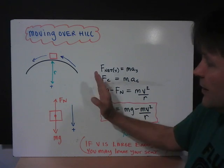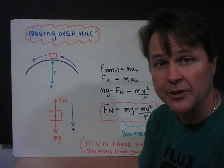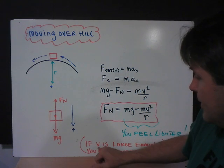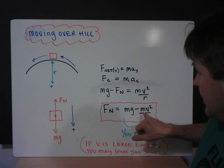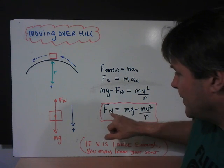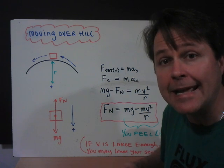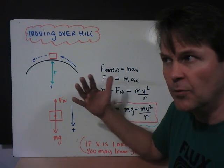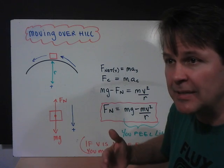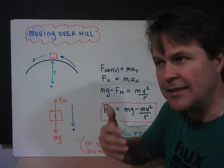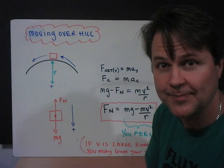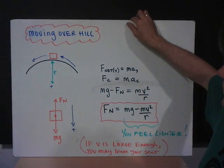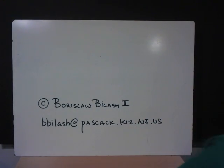Consequently, as you go up and over a hill, you're probably familiar with this, you feel lighter. Now, if v is large enough, what could end up happening? If this is large enough, the fn value can calculate to be a negative number. Well, the force of the seat acting on me is negative. That's a nonsense answer, but what that tells you is you've just flown out of your seat.